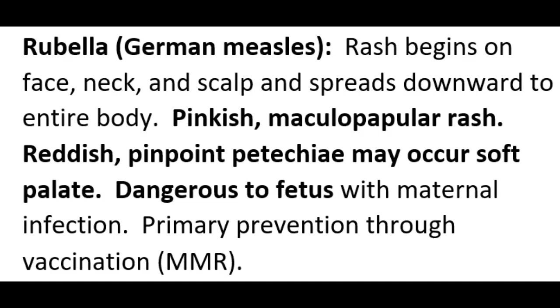Primary prevention for rubella occurs through the MMR vaccination — the R in MMR stands for rubella. That's a two-dose vaccination: the first dose at age one and the second dose recommended for ages four to six years. The MMR vaccination is a live vaccination, which is worth noting.